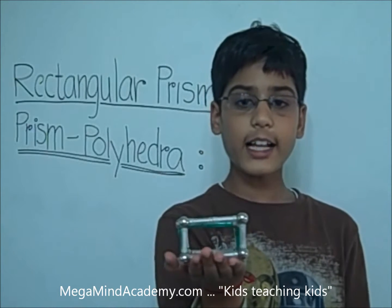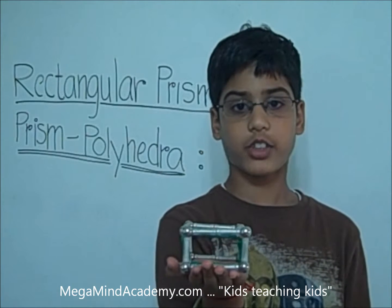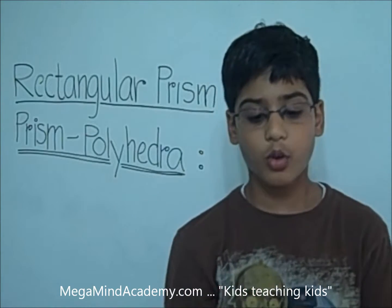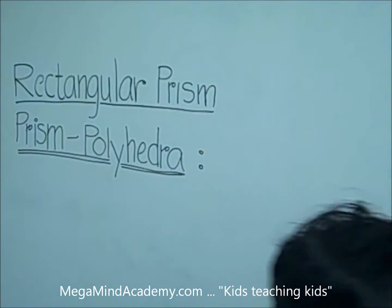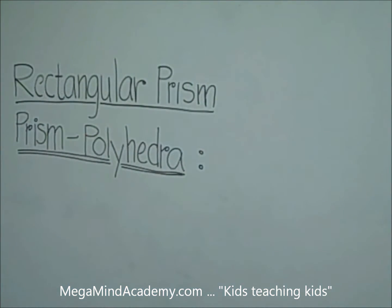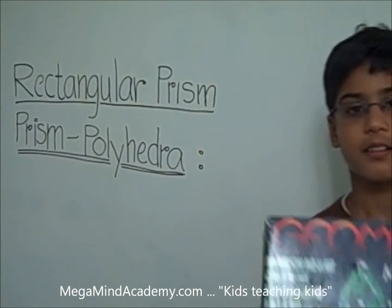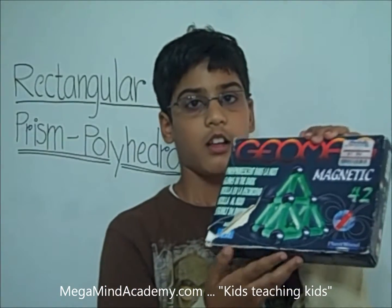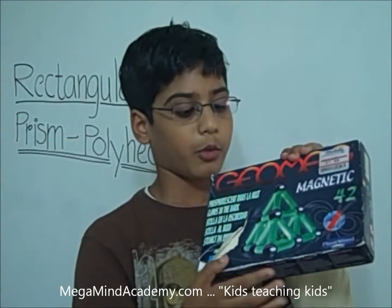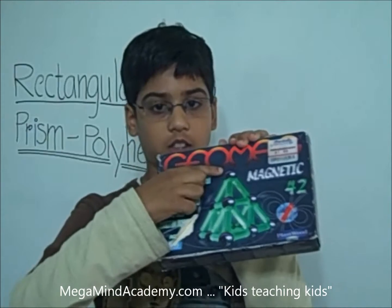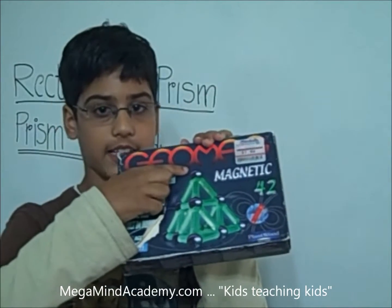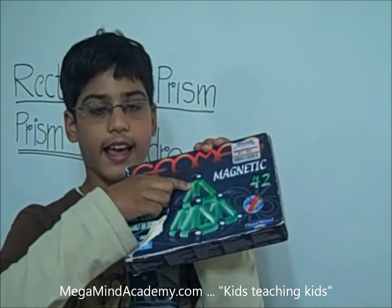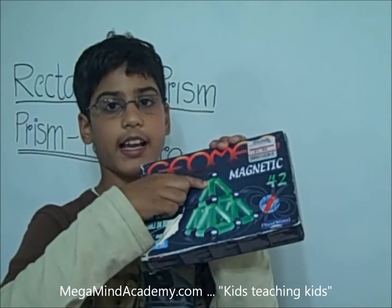Now let's learn about how to build a rectangular prism. I'm going to use geomagnets — the magnet balls as vertices and the magnet sticks as edges.